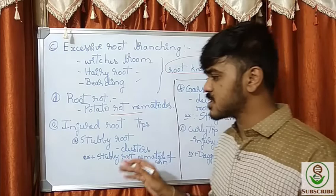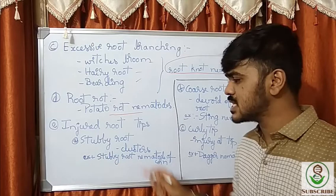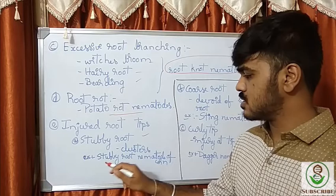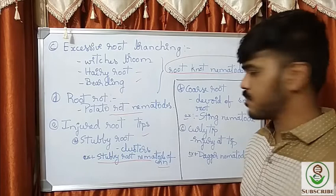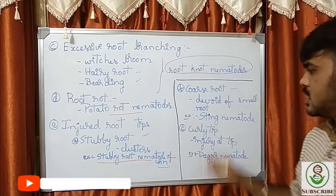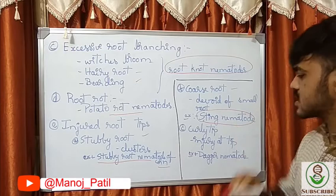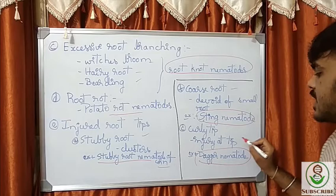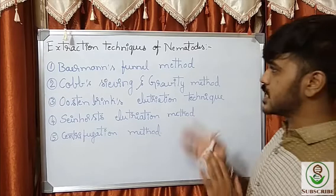Another below-ground symptom is injured root tips, among which there are three possible conditions. First is stubby root, which forms clusters — the special example is the stubby root nematode of corn. Second is coarse root devoid of small roots, exhibited by the sting nematodes. Third is the curly tip condition, exhibited by the dagger nematode, where injury at the tip occurs.